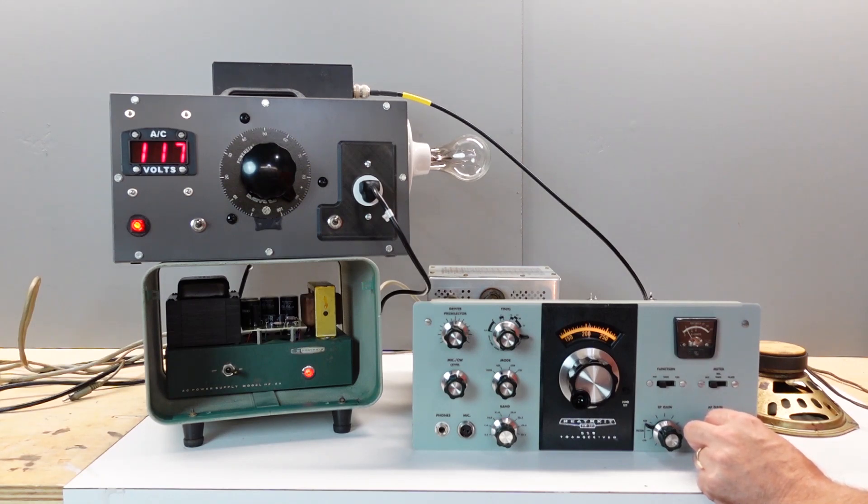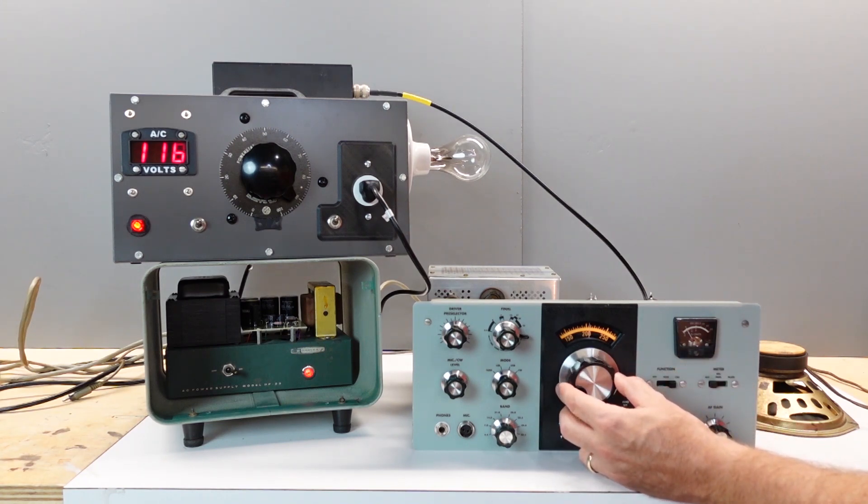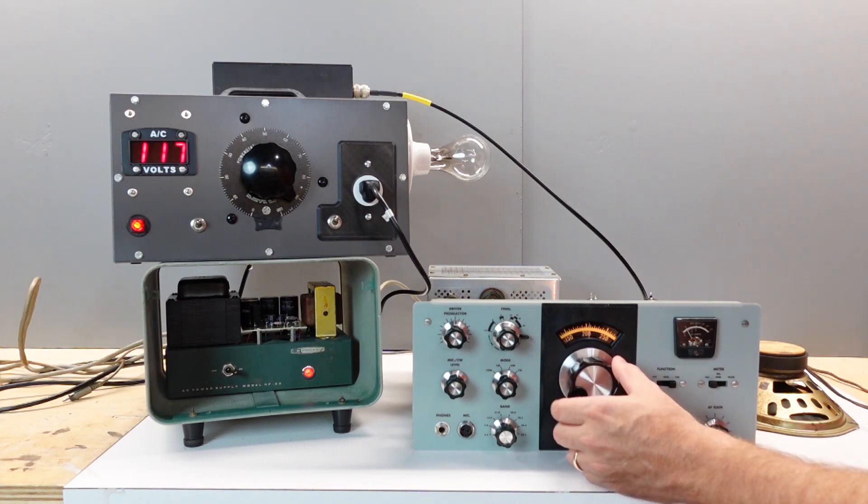Now the next step here ordinarily would be, well, let's put the rig on the air and see if we get any received signals. There's actually an intermediate step that we can do here on this HW-101. There's the crystal calibrator and the way that Heathkit has designed it, it actually injects the signal right at the front end of the RF chain. So if you can hear the calibrator signal, that's a generally pretty good sign that the entire receive chain is working. And listen to that. It's working.